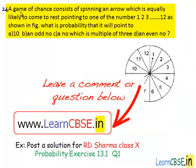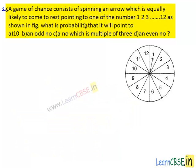Let's see the 26th question. A game of chance consists of spinning an arrow which is equally likely to come to rest pointing to one of the numbers 1, 2, 3, so on up to 12, as shown in the figure. What is the probability that it will point to 10, an odd number, a number which is a multiple of 3, an even number?